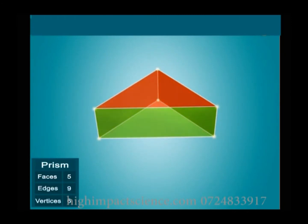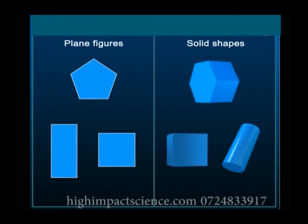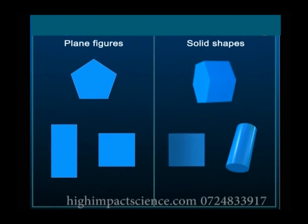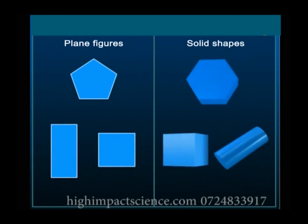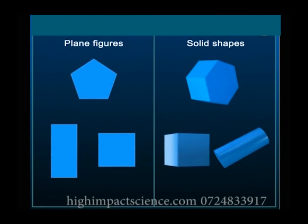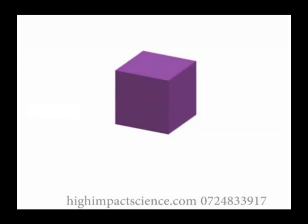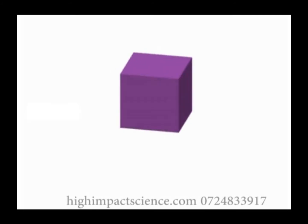While plane figures with straight edges are called polygons, solids with flat faces are called polyhedrons or polyhedra. When drawing three-dimensional solids on a flat surface, the edges that are visible from the angle of view are drawn in continuous lines, and the invisible edges are drawn in broken lines.